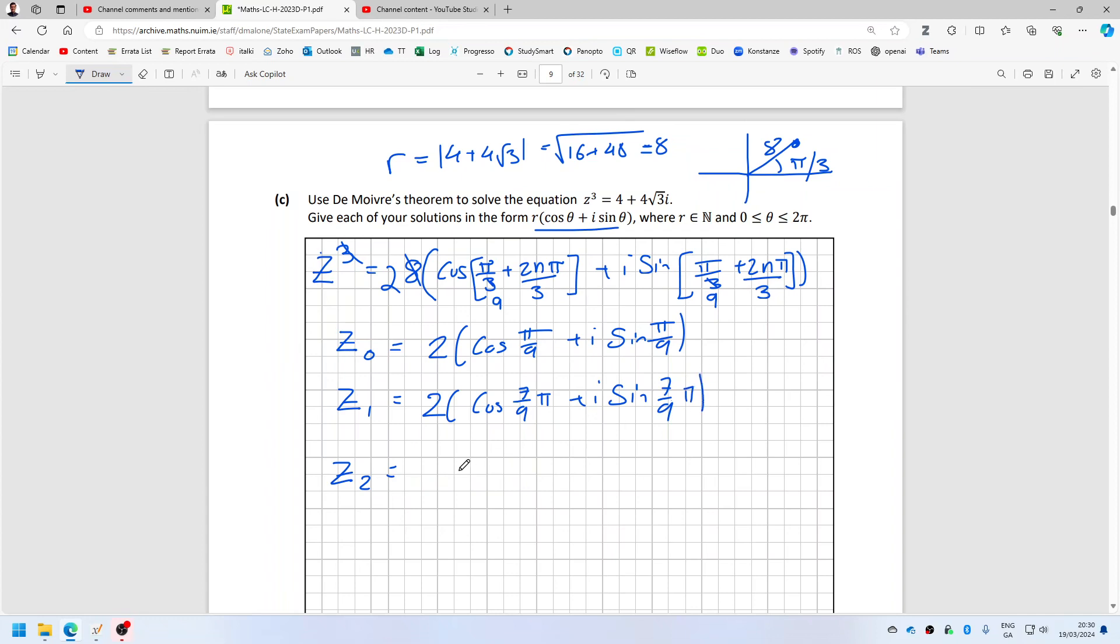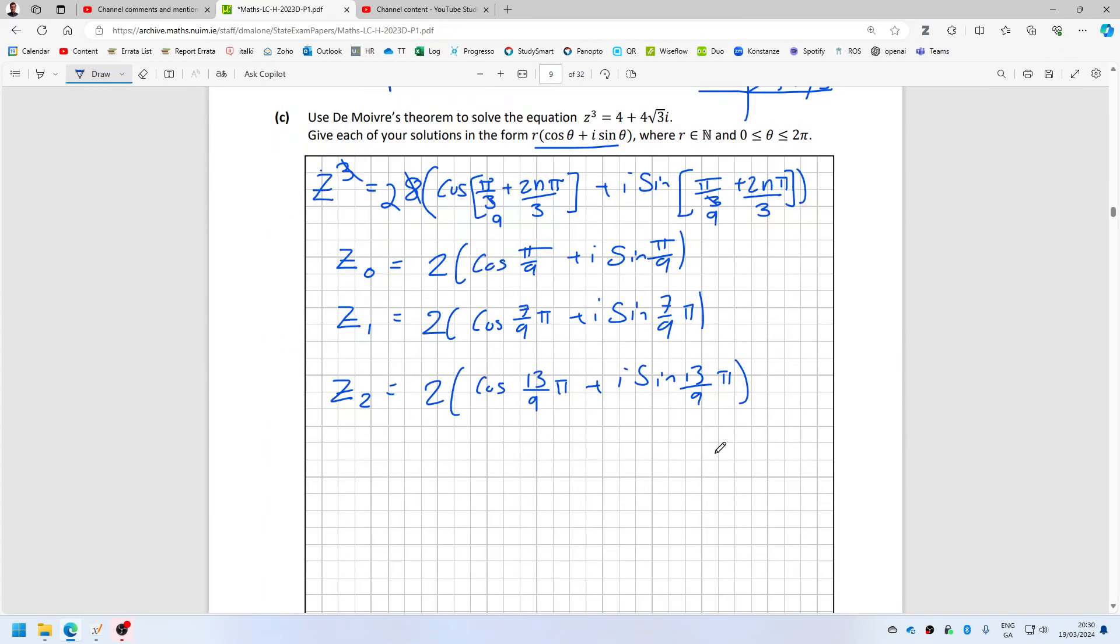And then the last one is z_2 equals 2 times cos 13 pi over 9 plus i sine 13 pi over 9. I guess that's it for question 3.